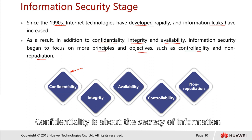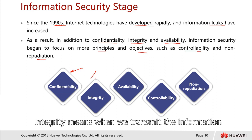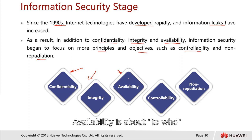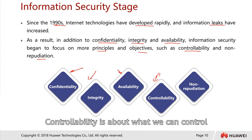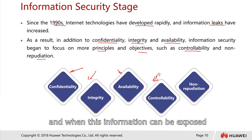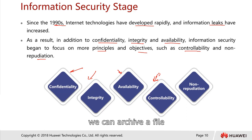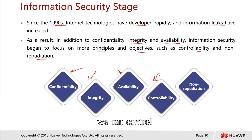Confidentiality is about the secrecy of information. Integrity means that when we transmit information, we want to make sure whatever goes from origin to destination, the information is intact and the same. Availability is about who can access it. Controllability is about what we can control — when information can be exposed or up to what level — for example, we can delete a file, archive a file, or take ownership on a file server.